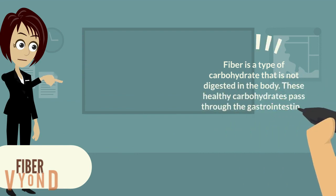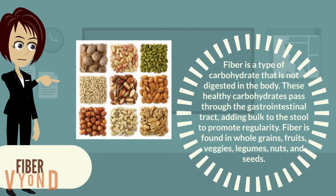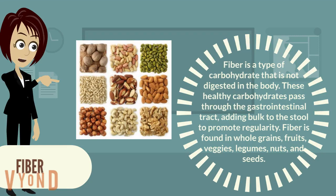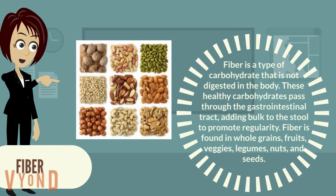Fiber is a type of carbohydrate that is not digested in the body. These healthy carbohydrates pass through the gastrointestinal tract, adding bulk to the stool to promote regularity. Fiber is found in whole grains, fruits, veggies, legumes, nuts, and seeds.